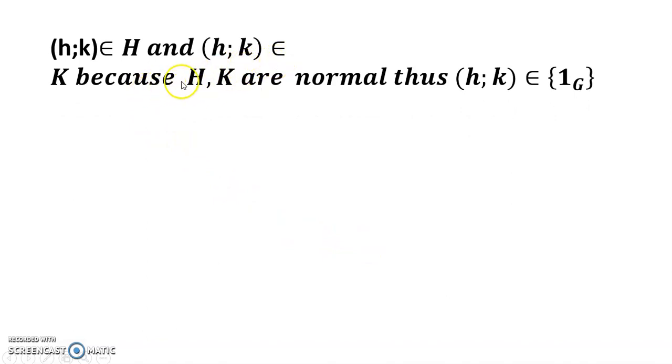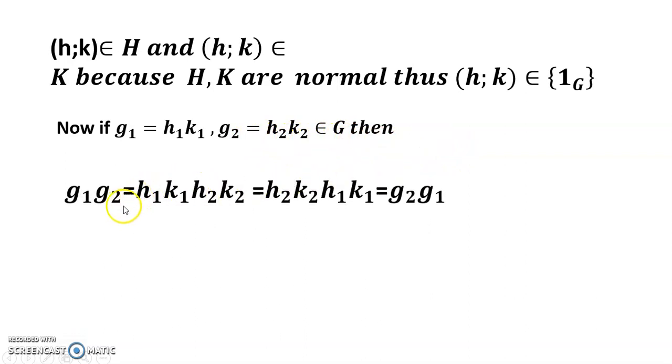Because H, K are normal, thus (h,k) ∈ {1_G}. Now if g₁ = h₁k₁ and g₂ = h₂k₂ ∈ G, then g₁g₂ = h₁k₁h₂k₂ = h₂k₂h₁k₁ = g₂g₁.